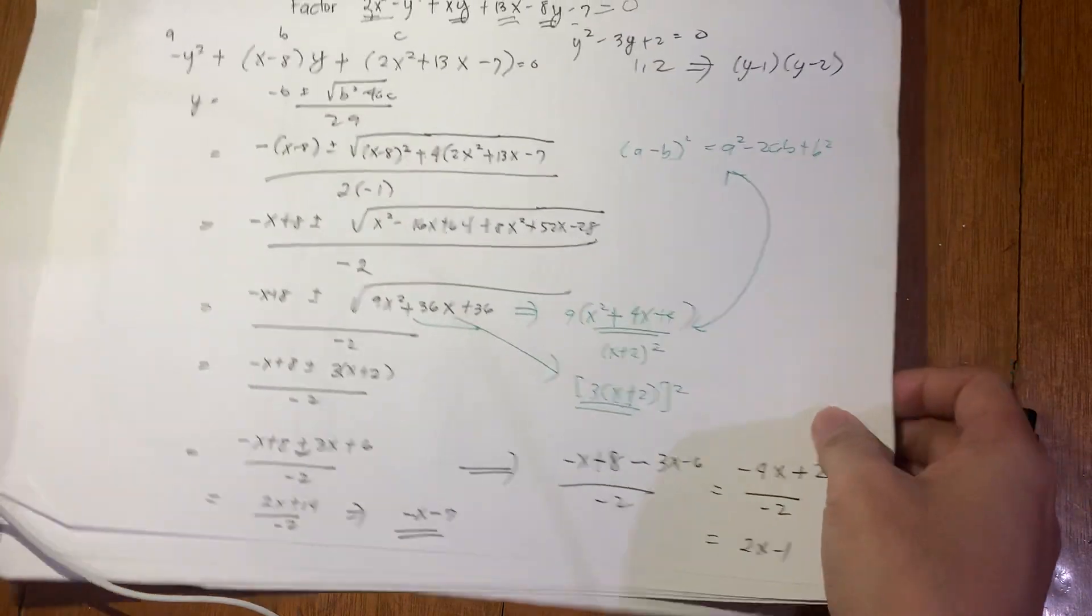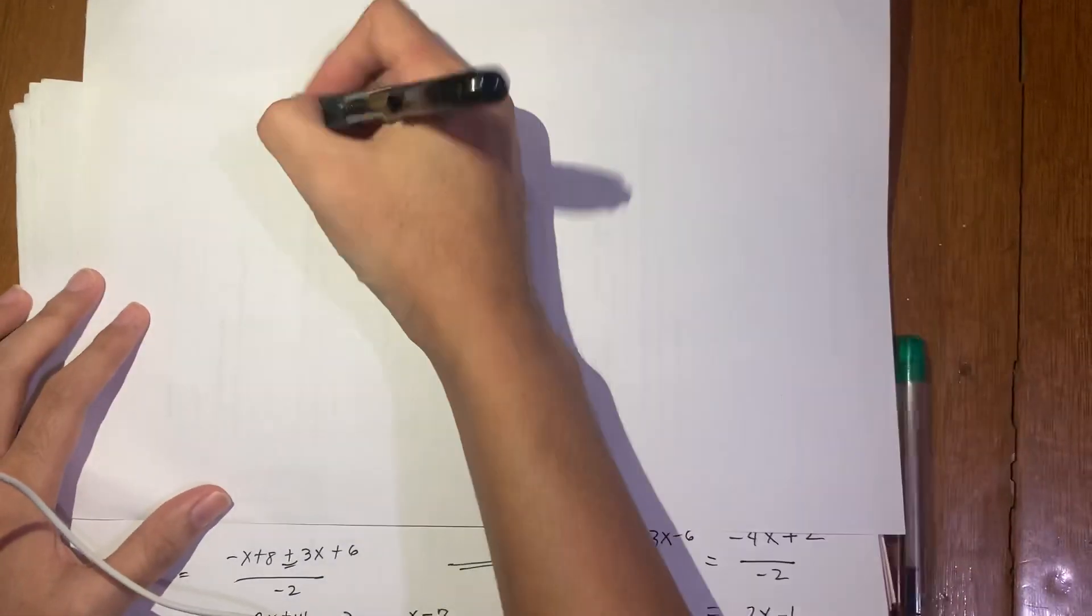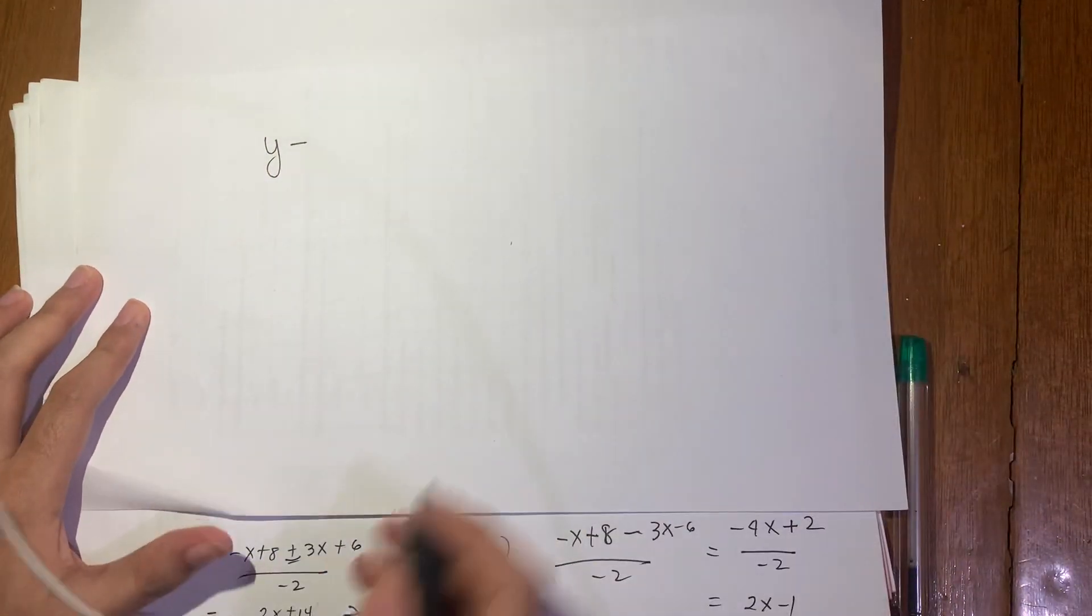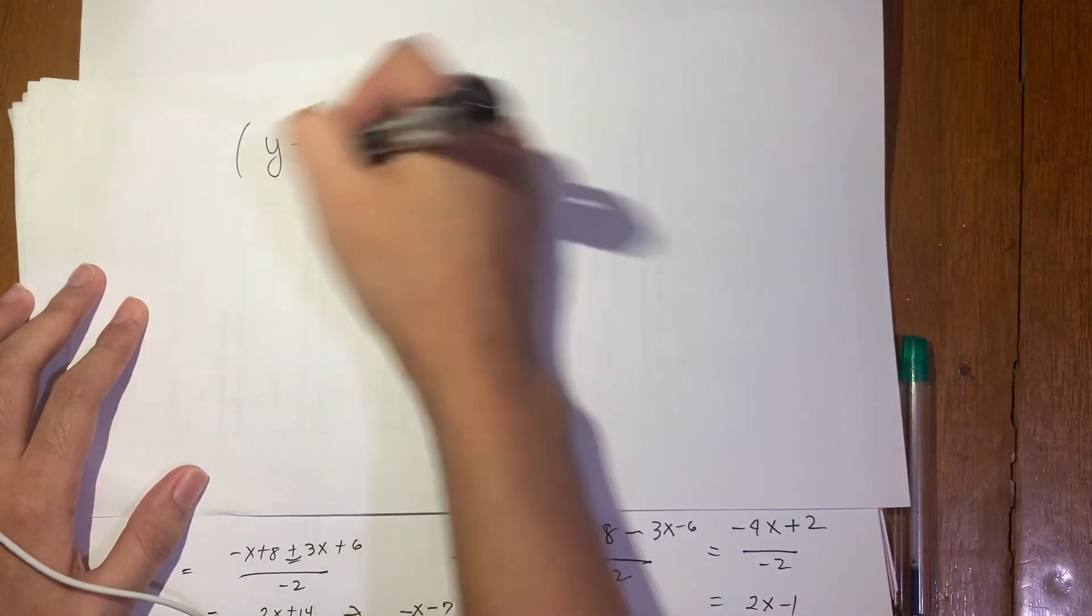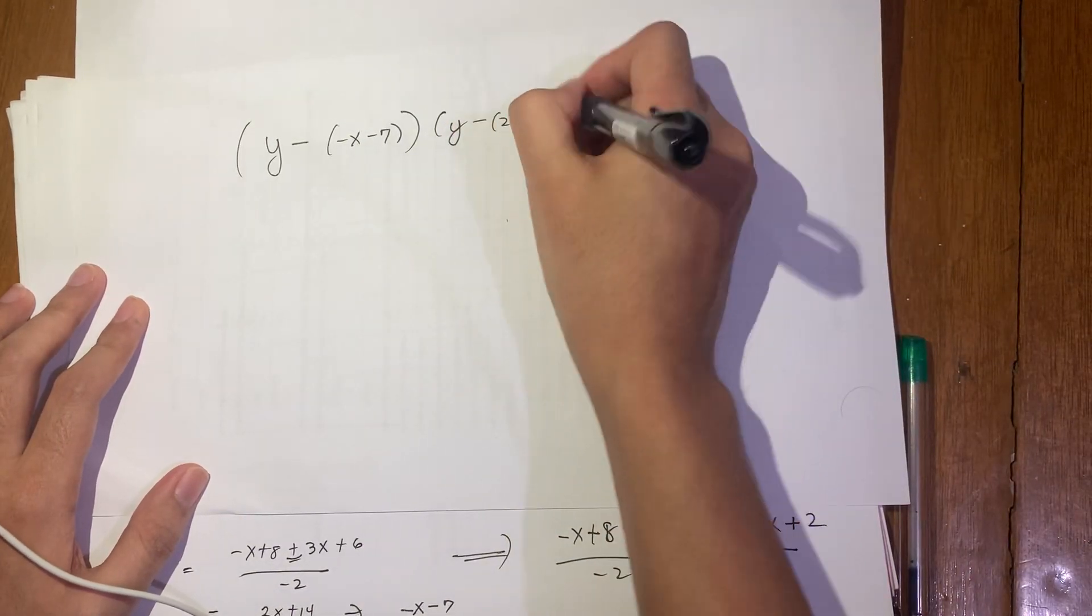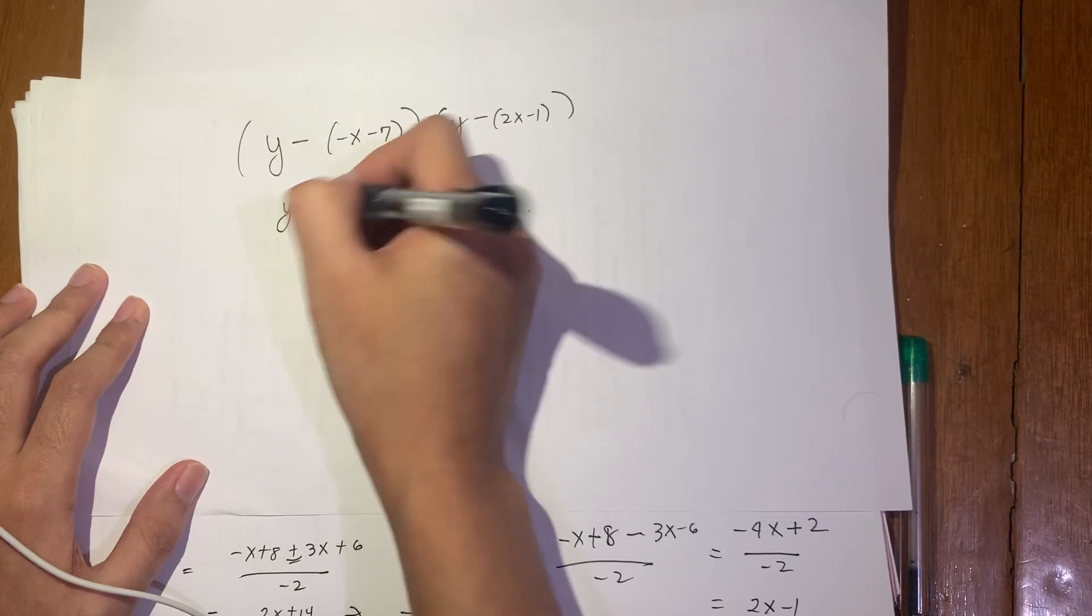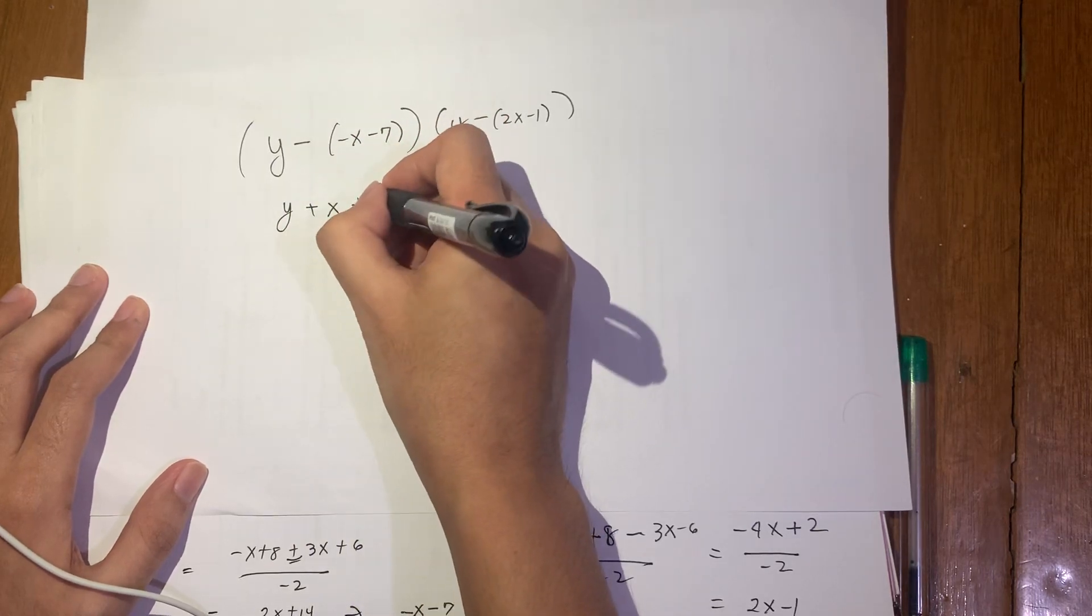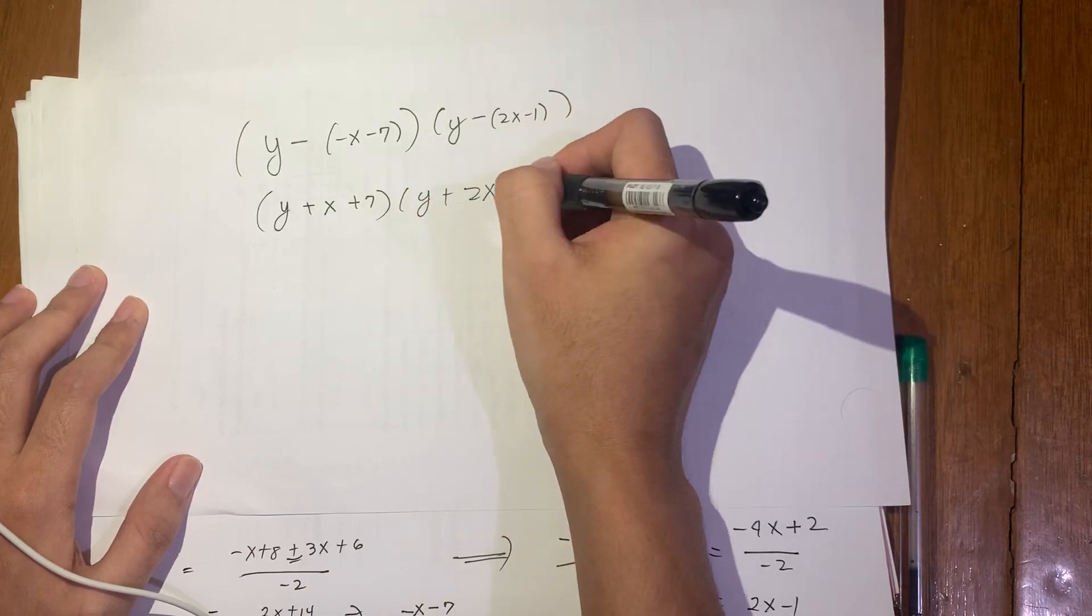On the other hand, if I make this minus: negative x plus 8 minus 3x minus 6 over negative 2 equals negative 4x plus 2 over negative 2, which is 2x minus 1. Therefore, the expression is factorable as (y - (negative x - 7))(y - (2x - 1)). I'll just simplify this, distribute the negative: (y + x + 7)(y + 2x + 1).